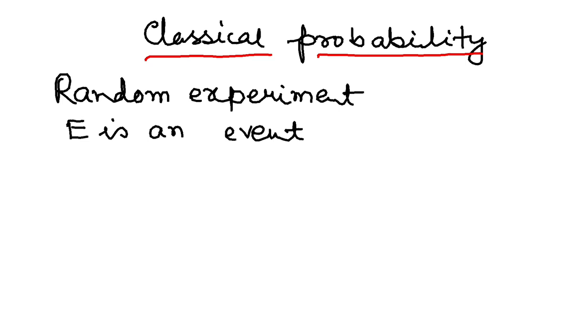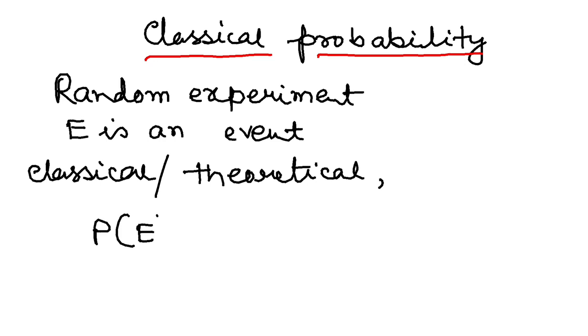Okay, so the classical probability or the theoretical probability - sometimes we call it theoretical. Classical or theoretical probability of an event E is normally denoted by P of E, probability of event E.